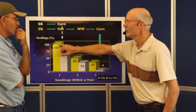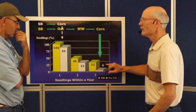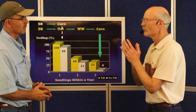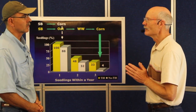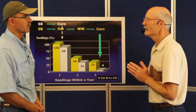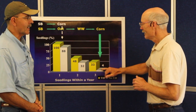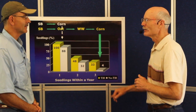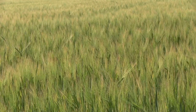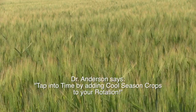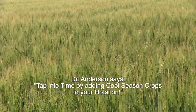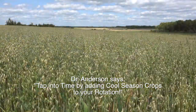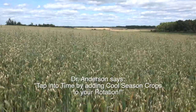In other words, you went from 100 down to four. Even before you applied herbicide, you've reduced your weed density in your field 96%. Examples like this are why producers are reducing their herbicide use in no-till. The key point is you need to develop a rotation that taps into time. The cool season crops help you do that.